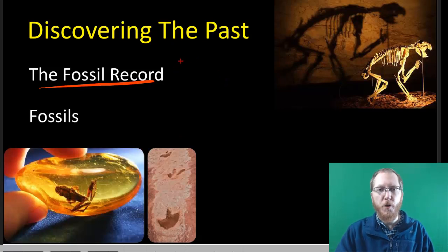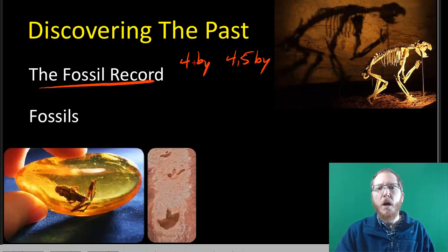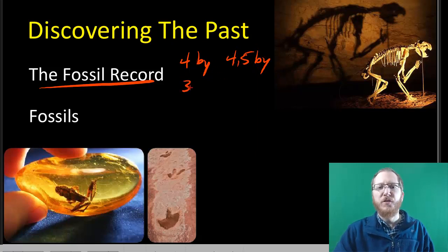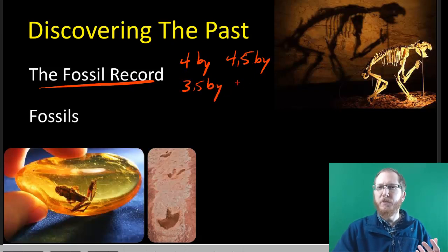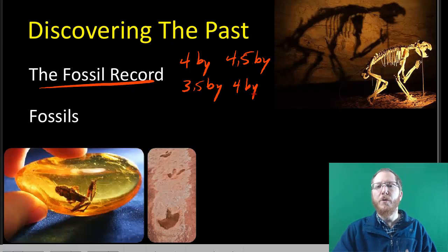This history goes back in terms of Earth about 4 billion years — that's how old the rocks we still have are. Most people peg the Earth to be more like 4.5 or 4.6 billion years old in total, but we do have rocks that go back 4 billion years. We have fossils that go back about 3.5 billion years, but because those fossils were pretty advanced bacteria, there's a good chance that life actually started more like 4 billion years ago.